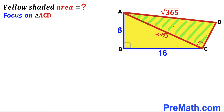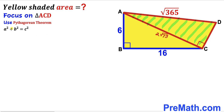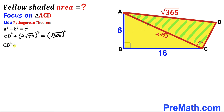Now let's focus on right triangle ACD and apply the Pythagorean theorem again. Here A² + B² = C². Our hypotenuse is √365, and the two legs are 2√73 and the unknown side CD. Filling in: CD² + (2√73)² = (√365)², which simplifies to CD² + 292 = 365.